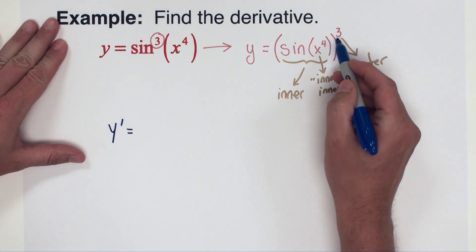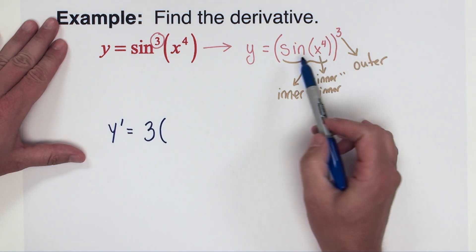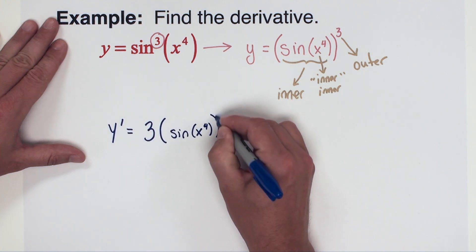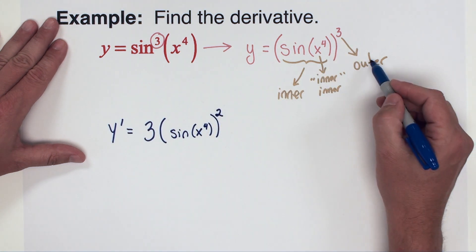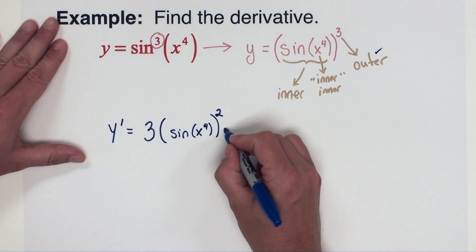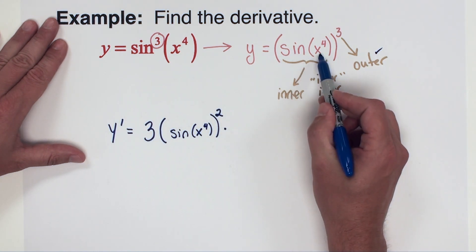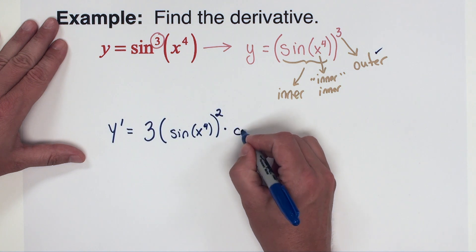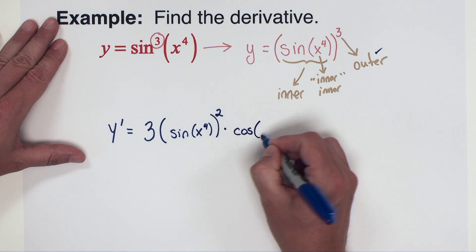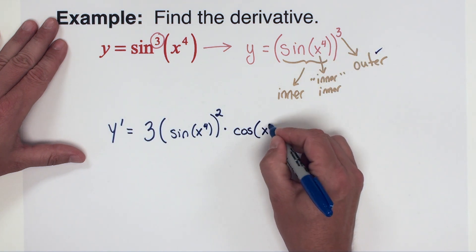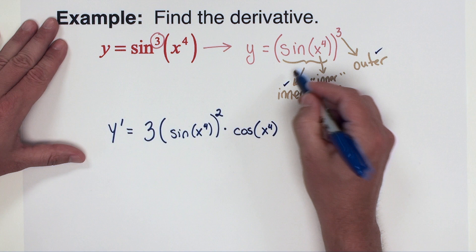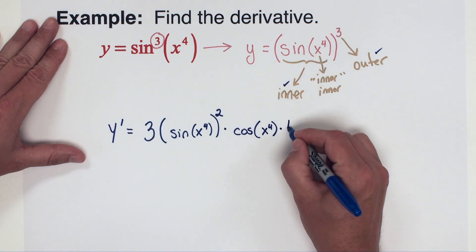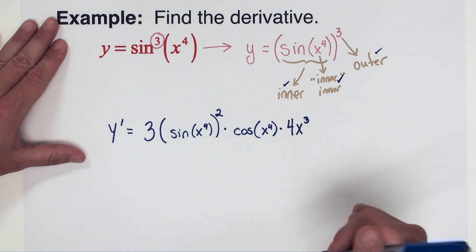Let's begin this derivative. For y prime, I'll start with the power: 3 comes to the front, everything inside stays — so sine of x to the fourth — and the power becomes 2. Now I multiply by the derivative of sine of x to the fourth. The sine is the outer, so its derivative is cosine, and I keep its inside the same. Then I move to the furthest inside: the derivative of x to the fourth is 4x cubed.